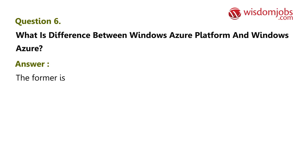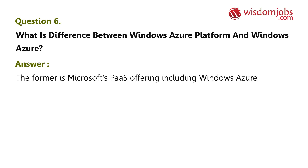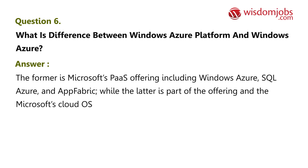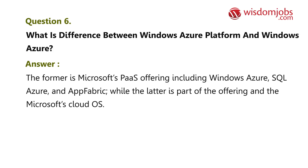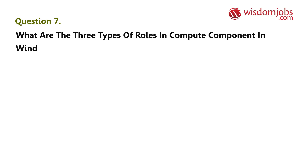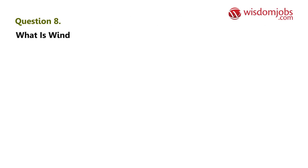Question 6: What is the difference between Windows Azure Platform and Windows Azure? Answer: The former is Microsoft's PaaS offering including Windows Azure, SQL Azure, and App Fabric, while the latter is part of that offering and is Microsoft's cloud OS. Question 7: What are the three types of roles in the Compute component in Windows Azure? Answer: Web, Worker, and VM.